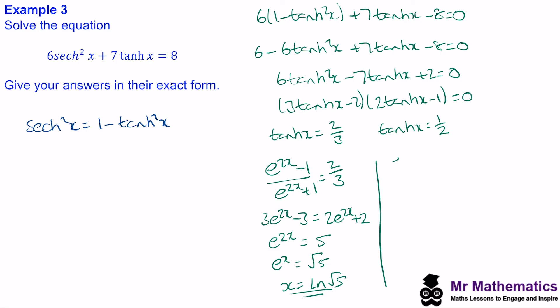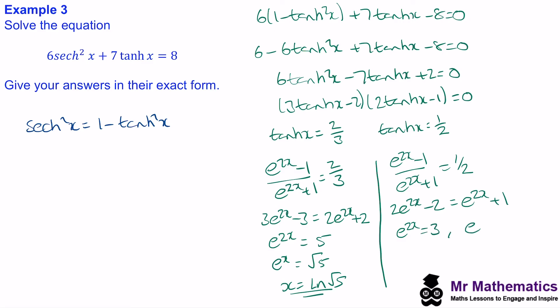For our other solution, e to the 2x minus 1 over e to the 2x plus 1 equals a half. Moving terms across, 2e to the 2x minus 2 equals e to the 2x plus 1, so e to the 2x equals 3. Taking the square root, e to the x equals root 3, and so x equals the natural log of root 3. Thank you very much for watching — I hope you found that useful. You can download the full lesson and worksheet from my website, mrmathematics.com. There's a link in the description below. Thanks again and take care.